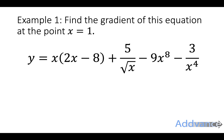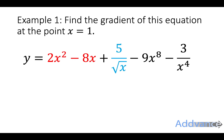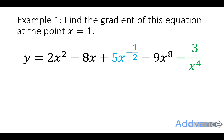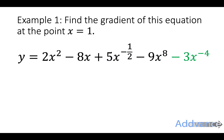Now a more complicated example might look like this. We're going to differentiate each part separately, and then find the gradient of the equation at x equals 1. We start by expanding the bracket: we get 2x squared minus 8x. Always expand brackets before you differentiate. Then 5 over root x is the same as 5x to the power minus a half, and minus 3 over x to the power 4 is the same as minus 3x to the power minus 4.